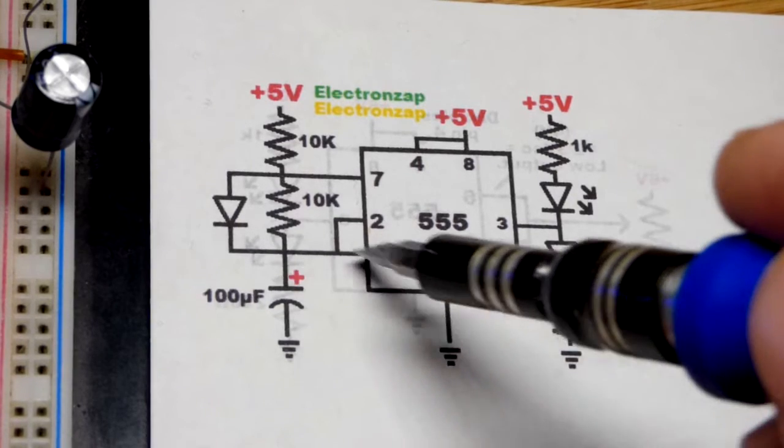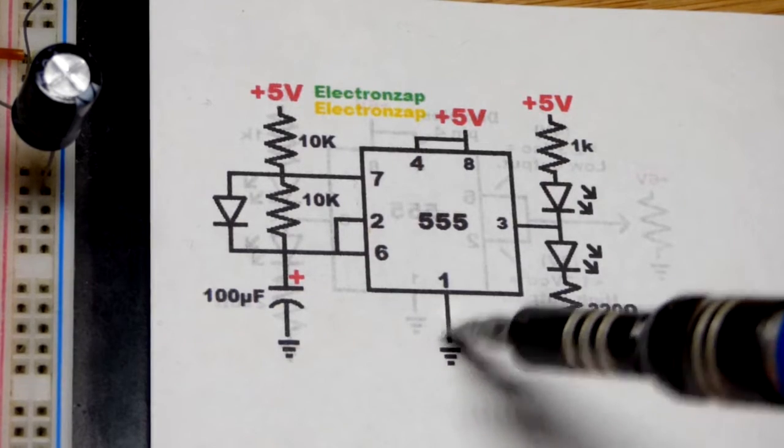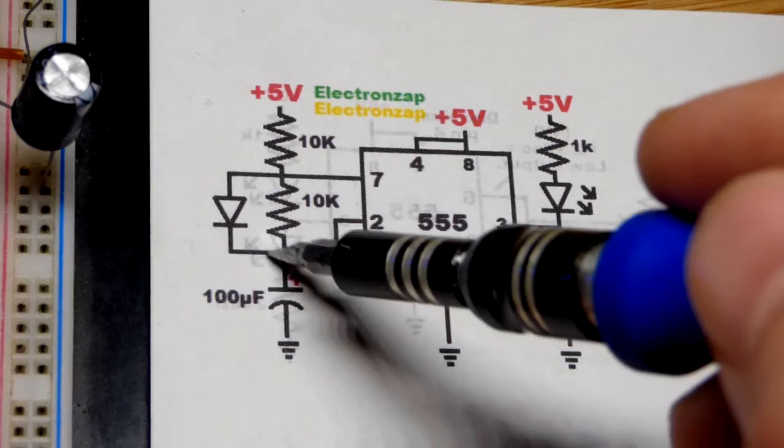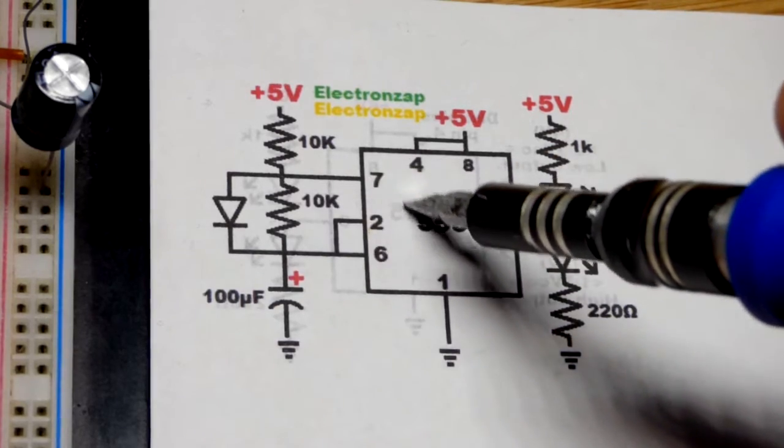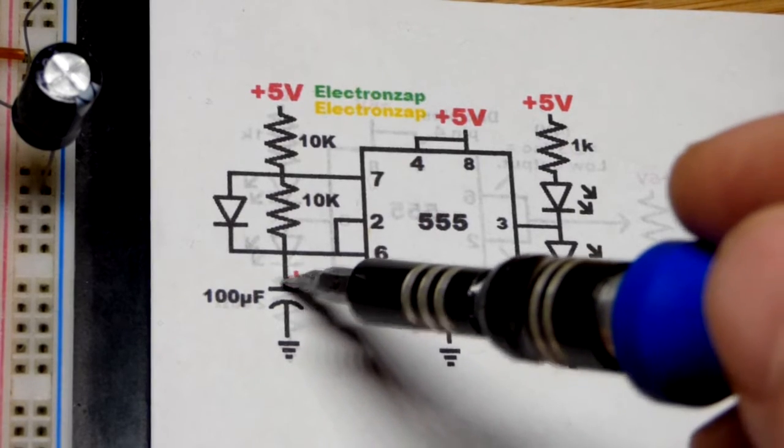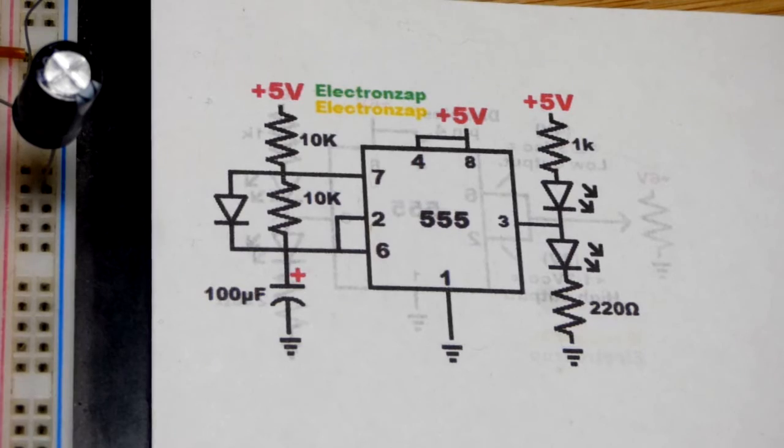When pin 6 sees that the capacitor charged to two-thirds of the supply voltage, pin 7 connects to ground and the output also connects to ground, and that LED lights up. Then the capacitor discharges through that resistor. Any current through this resistor will also just go to ground and discharges till pin 2 sees one-third of the supply voltage, and the process repeats.